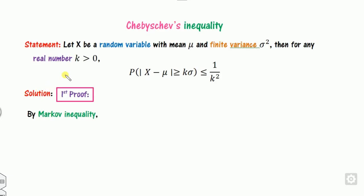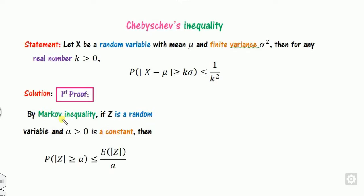I will give you two proofs — you can remember either one, as both are very simple. The first proof is based on the Markov inequality. The Markov inequality states: for any random variable Z and constant a, this inequality holds. Based on this, we can prove the Chebyshev inequality in just two lines.